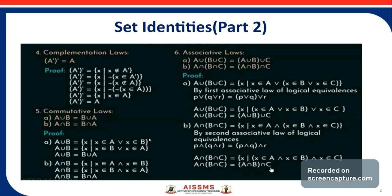We can rewrite this definition as X belongs to B or X belongs to A, so A union B equals B union A. For the second commutative law, A intersection B is the set of all X such that X belongs to A and X belongs to B. We can replace this with X belongs to B and X belongs to A, so A intersection B equals B intersection A.